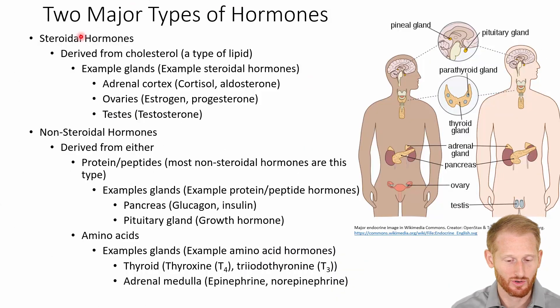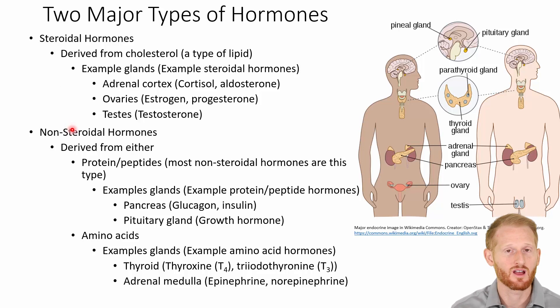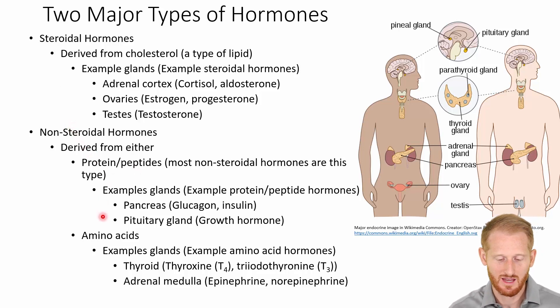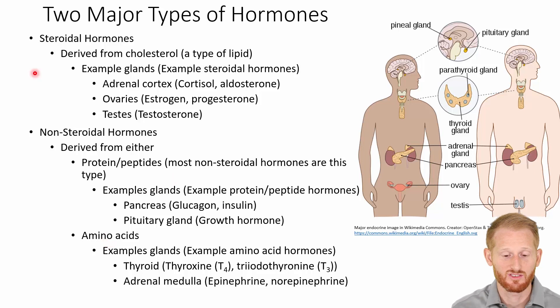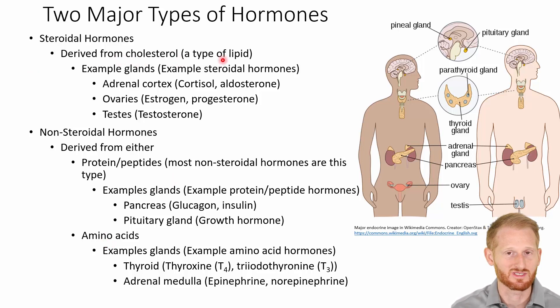The endocrine system of the body has different types of hormones that it can release in order to affect the internal environment of the body. We have steroidal hormones, we have non-steroidal hormones, and within the non-steroidal hormones we have protein and peptide hormones, and we have amino acid hormones. The steroidal-based hormones are derived from cholesterol, which is a type of lipid — think fat here.